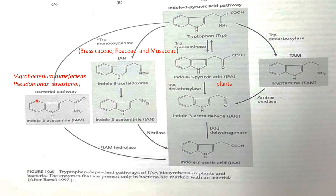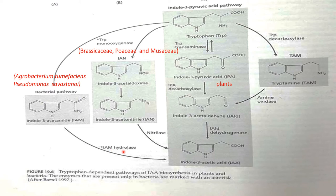In certain bacteria such as Agrobacterium tumefaciens and Pseudomonas species, tryptophan is converted into indole-3-acetamide with the help of the enzyme tryptophan monooxygenase. Later, this indole-3-acetamide is converted into indole-3-acetic acid with the help of the enzyme indole-3-acetamide hydrolase.